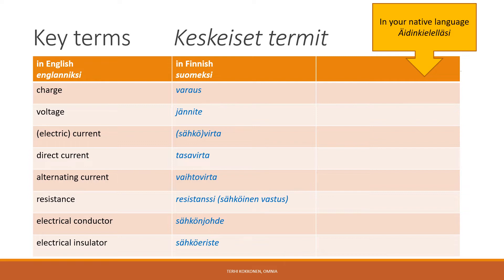Electrical phenomena are widespread in the natural world and, unlike thunderstorms, often occur unnoticed in our daily lives. We depend on electricity to do many things that are often taken for granted. There are four basic electrical terms which must be understood.